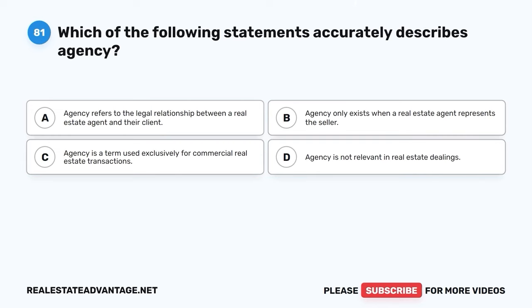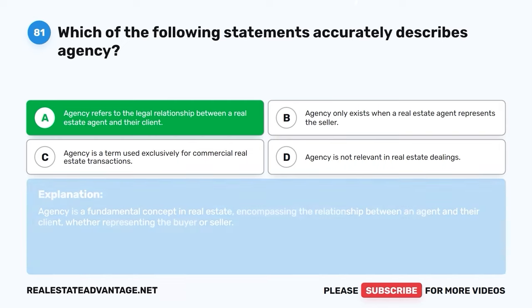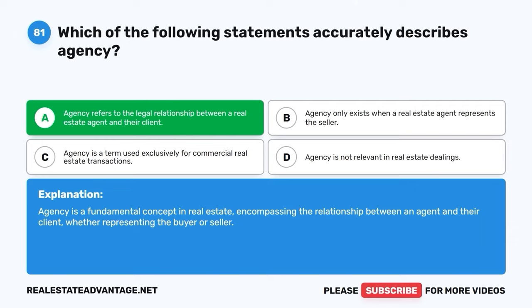Question 81. Which of the following statements accurately describes agency? A. Agency refers to the legal relationship between a real estate agent and their client. The correct answer is A: Agency refers to the legal relationship between a real estate agent and their client. Agency is a fundamental concept in real estate, encompassing the relationship between an agent and their client, whether representing the buyer or seller.